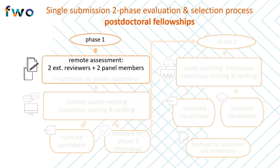In the first phase, the scientific chair of the panel distributes all applications amongst the members of the panel. All applications to be reviewed at this stage basically meet the formal admissibility requirements. For each application, the chair designates two panel members who will serve as internal reviewers. Panel members are expected to be generalists, able to make a global assessment of all applications assigned to them. At the same time, the FWO through its subcontractor ESF is looking for two on-topic specialists who can write an external review for the application.